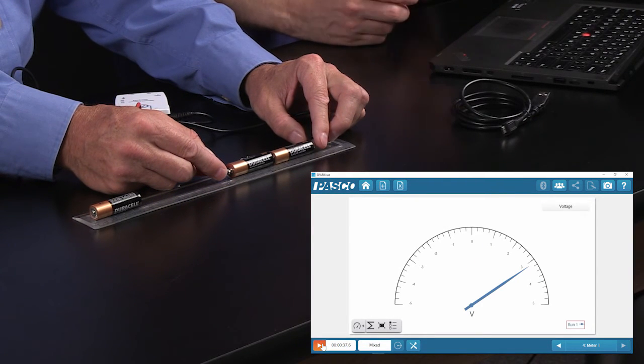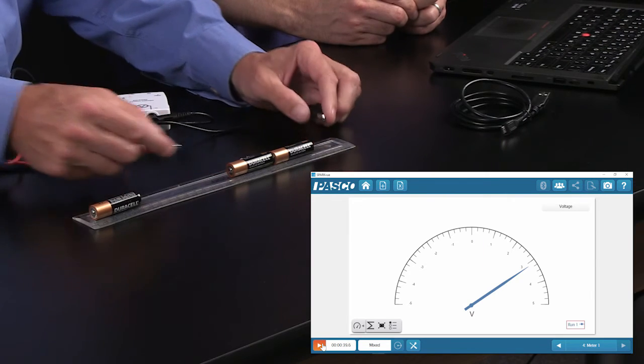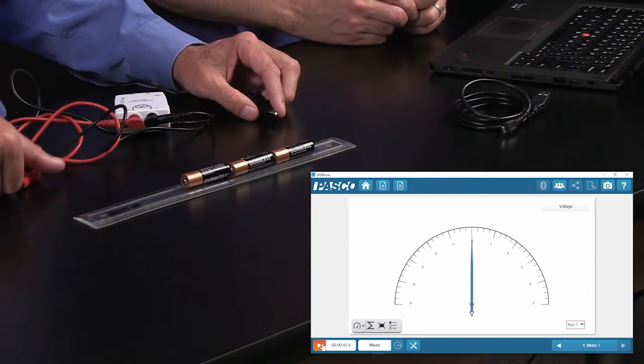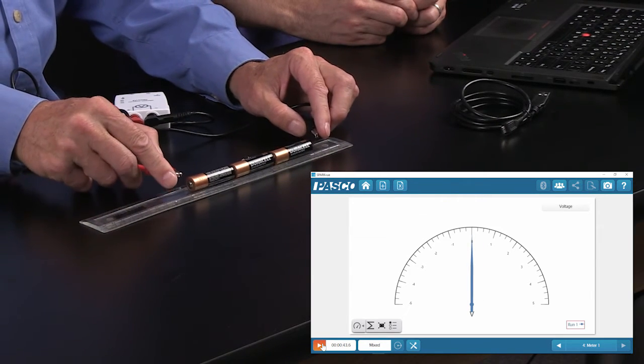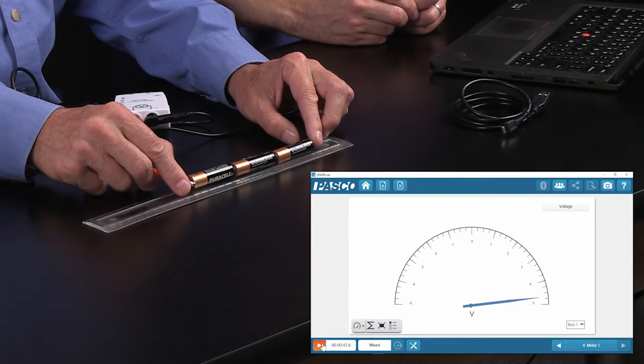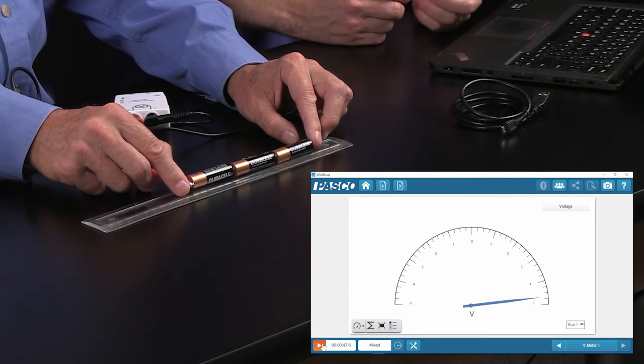So now instead of one point five, now I have a little bit over three volts. And I've got a third battery I'm going to slide in and connect that. There we go. And now we're a little over four point five volts. So every time we added one, we added about one point five volts.